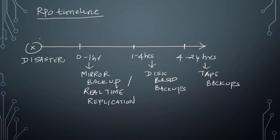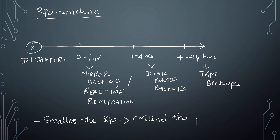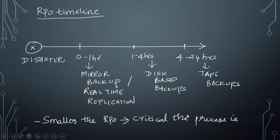The more it is closer to zero, the more critical the process. The smaller the RPO, the more critical the process. Always remember: RPO relates to data loss.